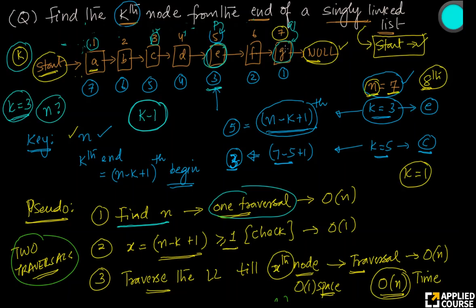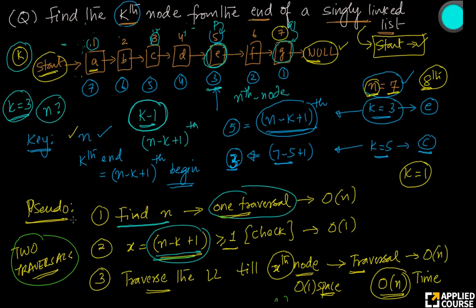When q reaches the last node — the nth node from the beginning — my p pointer is k minus 1 steps behind it, placing p at the (n minus k plus 1)th node from the beginning. This is exactly what we wanted. Even in the first solution with two traversals, we ended up at the (n minus k plus 1)th node. In this approach, I have done only one traversal.